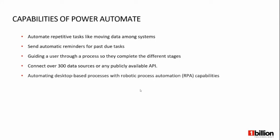If these data sources or connections don't satisfy our requirements, Power Automate also allows us to connect with any publicly available APIs as well, which is really great. The recently introduced feature is robotic process automation capabilities. With these capabilities, automation is not only for the cloud — we can automate desktop processes as well.